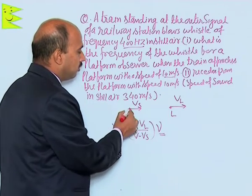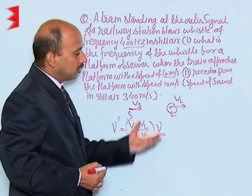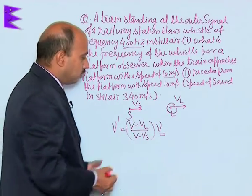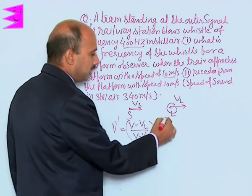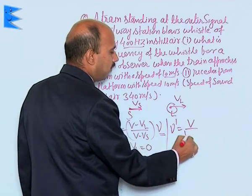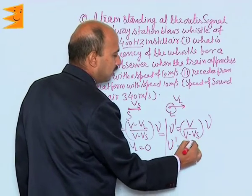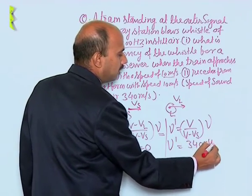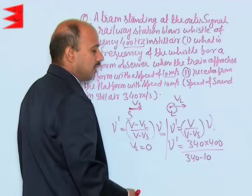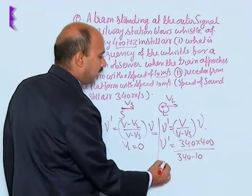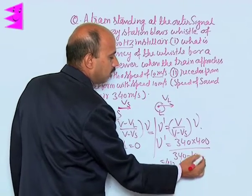In this case the source is moving towards the listener, but the observer on the platform is at rest, so Vl equals zero. Therefore, nu dash equals V upon V minus Vs, multiplied by nu. Substituting: 340 into 400 divided by 340 minus 10, which gives approximately 412.12 hertz. This is the apparent frequency heard by the listener when the train is approaching the platform at 10 meters per second.